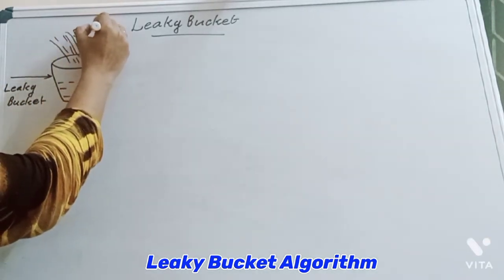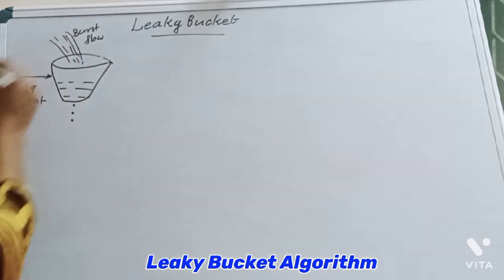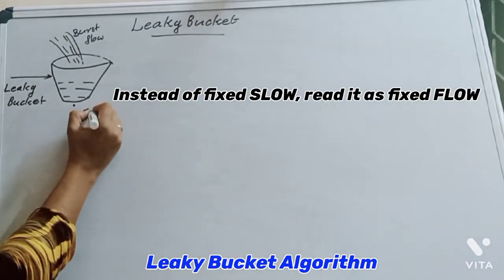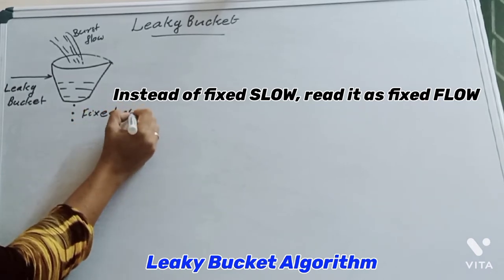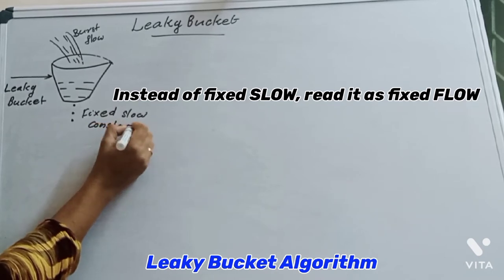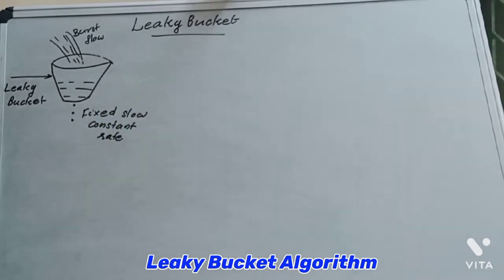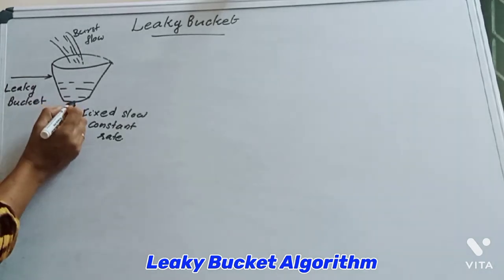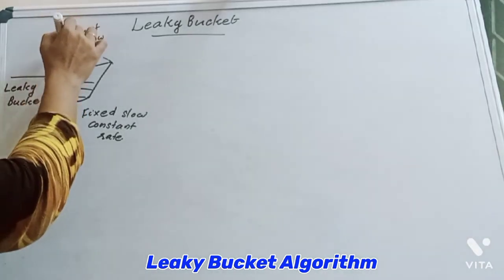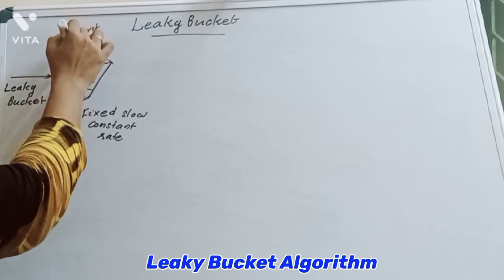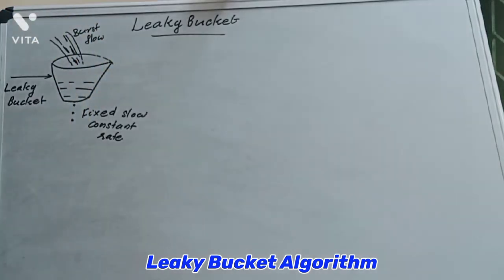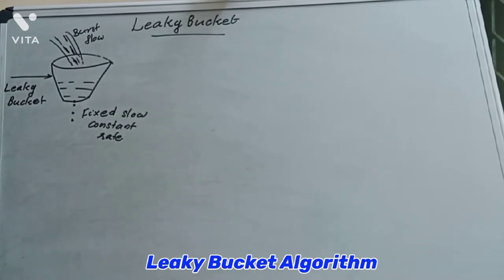It's a bursty flow converted to a fixed, steady flow. Imagine a bucket with a small hole at the bottom. Water is coming inside — that is non-constant, like bursty traffic in a network. The water is leaking from the bucket at a constant rate. Water is poured into the bucket at a non-constant rate but leaks from the bucket at a constant rate.